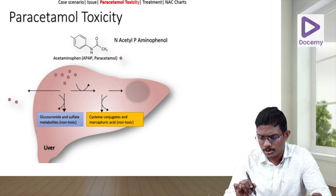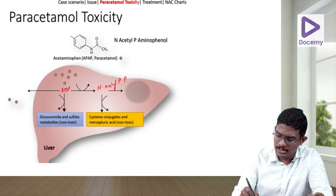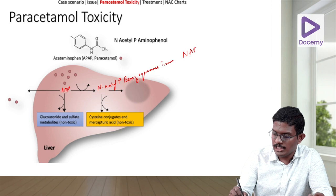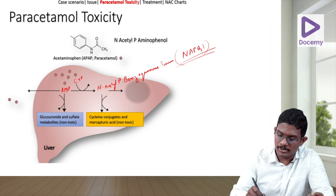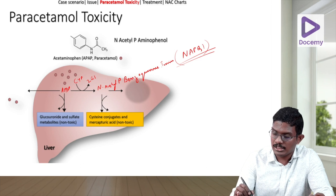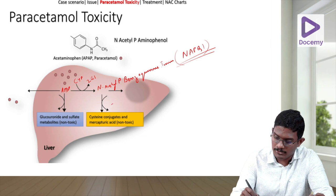Now let's learn what happens in paracetamol toxicity. Acetaminophen (AP) gets converted into N-acetyl-p-benzoquinone imine, which we call NAPQI. Acetaminophen is converted with the help of cytochrome P450 — specifically CYP2E1 — and once converted to NAPQI, it is converted back into a non-reactive, non-toxic metabolite with the help of glutathione.